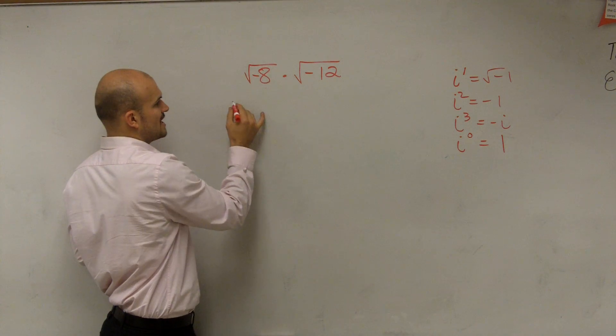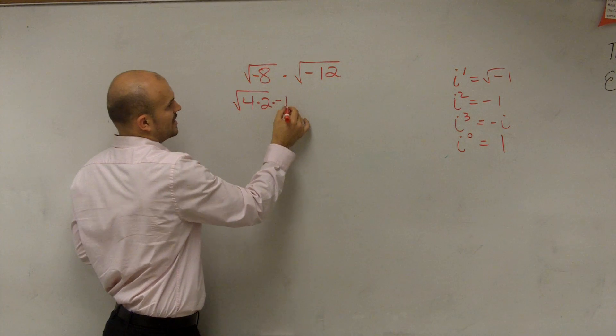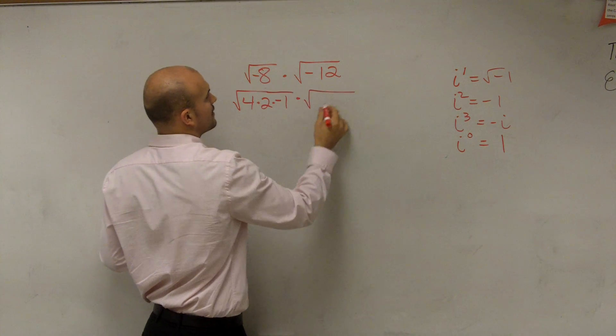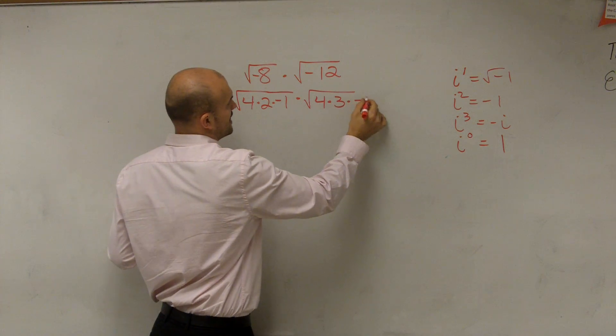So this one, you can break this down into 4 times 2 times negative 1. And this one, you can break down into 4 times 3 times negative 1.